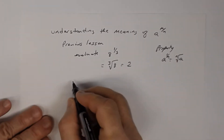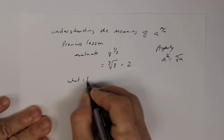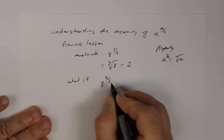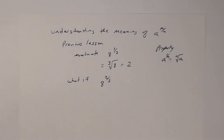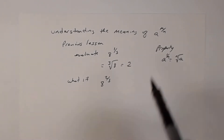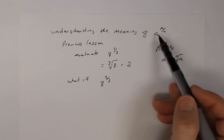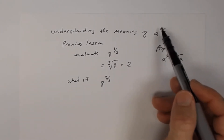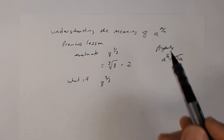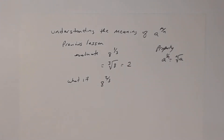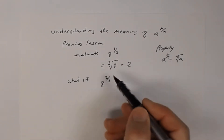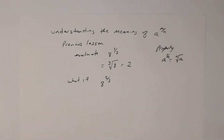Here's the idea: what if we have instead 8 to the 2/3? I know that 8 to the 1/3 is 2, but how do I deal with 8 to the 2/3? That's what we're going to talk about today — what if the numerator is no longer 1, but some other positive integer, like 2?